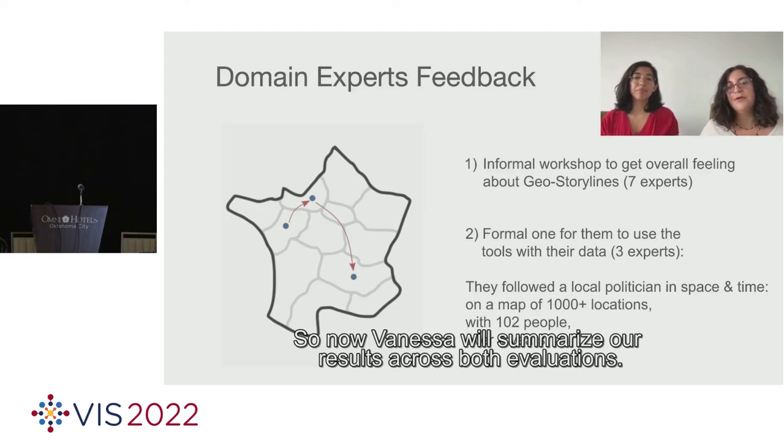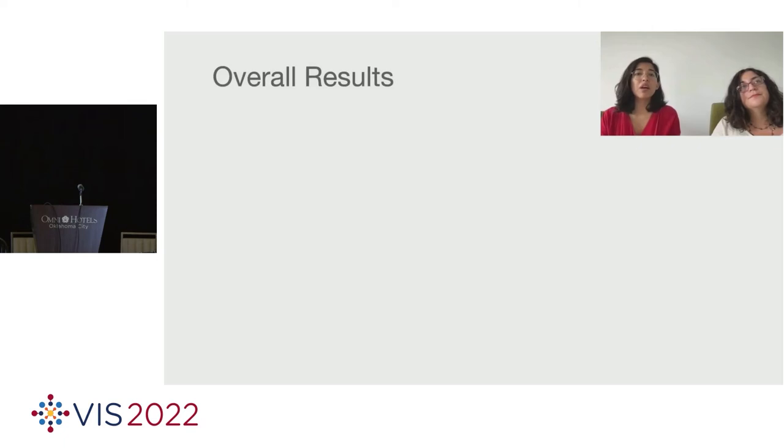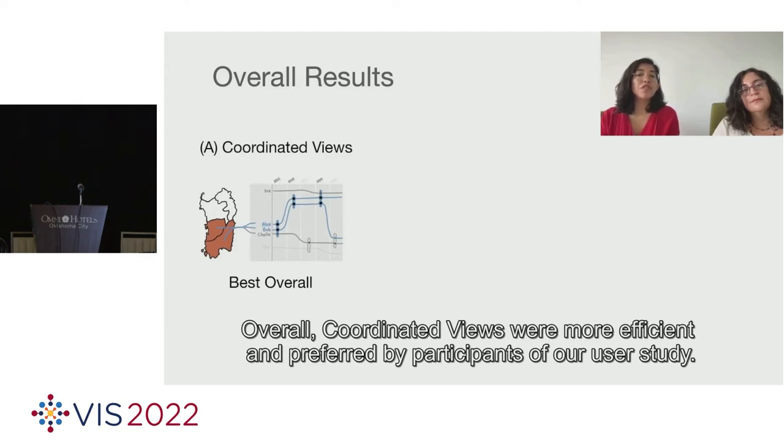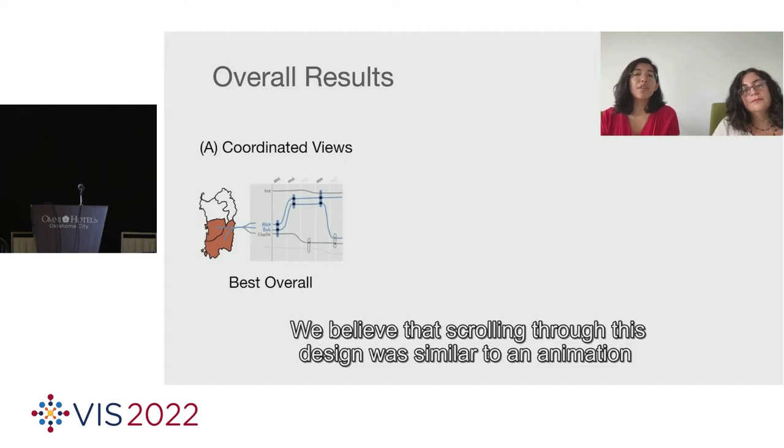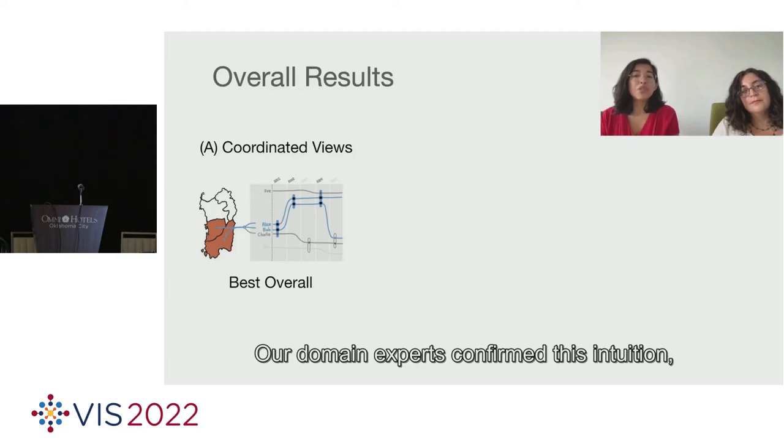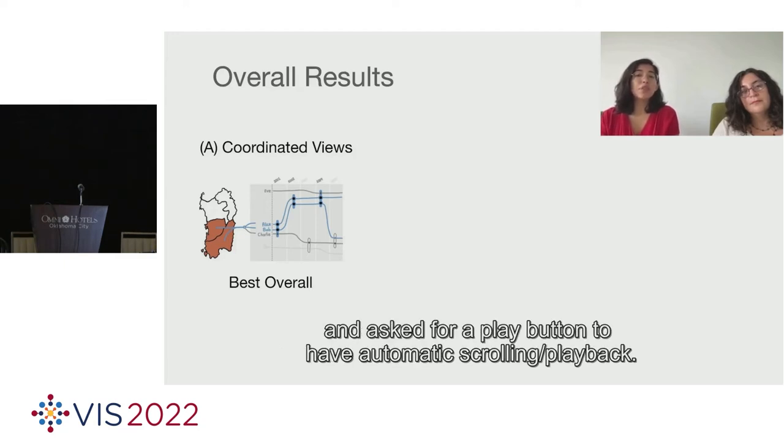They tried to identify if there's a famous local politician who over time changed the region they represented in local elections. So now Vanessa will summarize our results across both evaluations. When analyzing our data collectively, we found that overall coordinated views were more efficient and preferred by participants of our user study. We believe that scrolling through this design was similar to an animation, which explained why it was easier to see the geotemporal patterns of direction and adjacency.